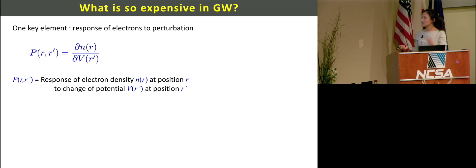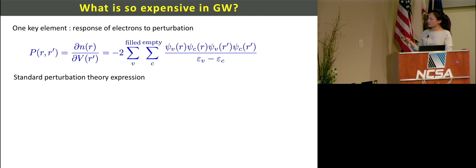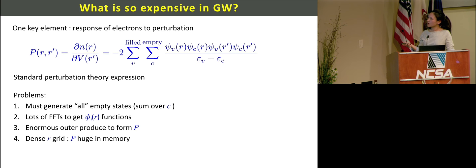Where the GW calculation takes more time and energy is the polarizability. This one is the response function - how the electron density changes at r when we change the potential at r prime. This is the explicit equation from standard polarization theory. As you can see, V means occupied state and C means unoccupied state. Because of this double sum, it scales n to the fourth. We have to generate all the empty states, which usually a lot. We have to do a lot of fast Fourier transforms. The outer product is very big to form P, and the grid number of R grid is pretty big, so P is huge in memory.